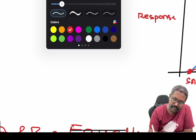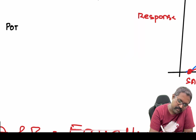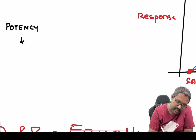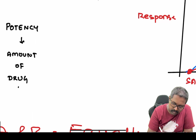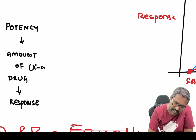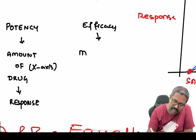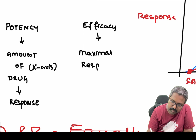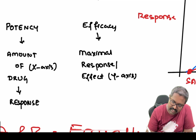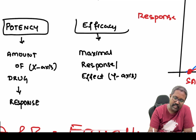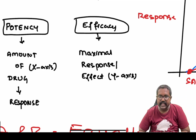Please remember: potency means it is the amount of drug that is required to produce the response, and it is usually represented by the x-axis. Efficacy is the maximal response or maximal effect, and it is represented on the y-axis. So potency refers to the amount of drug required, whereas efficacy refers to the maximal response that can be produced by an administered drug.